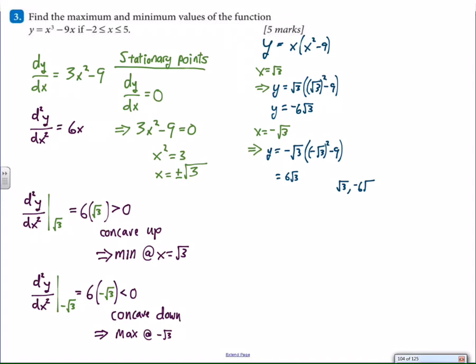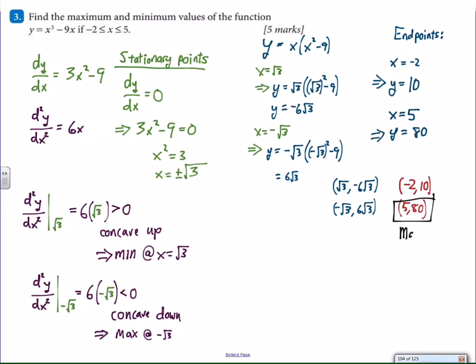Anyway, back to this work. I have two different y values. There's negative 6 square root of 3, there's positive 6 square root of 3, which means we have two points that are stationary that are locally their highest or lowest points. Now all I have to do is evaluate the function at x equals negative 2, and at x equals 5, and I would do that mentally, and I got 80 and 10.